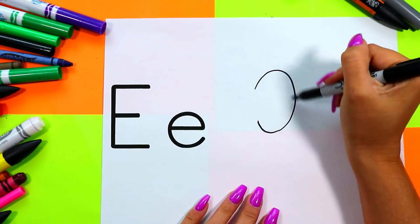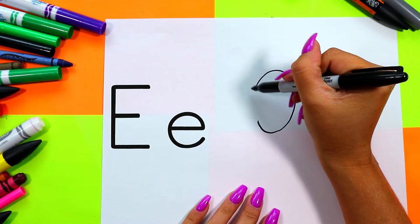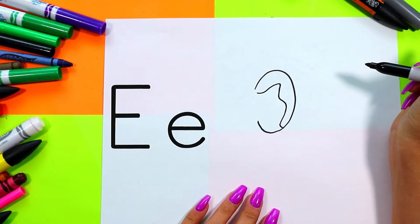A nice big curving shape for an elephant ear and a second wavy line down.